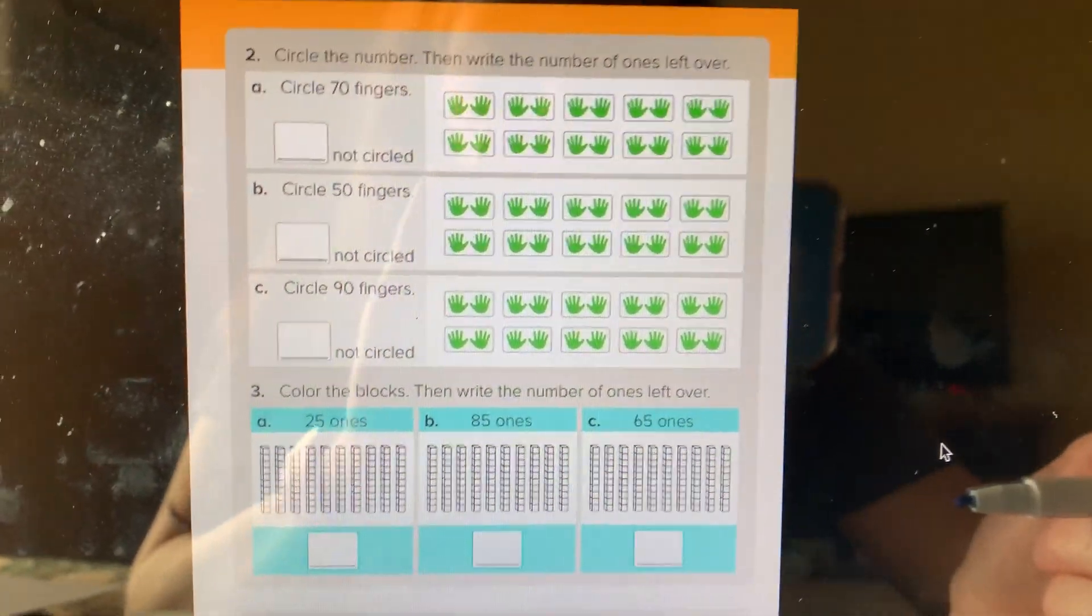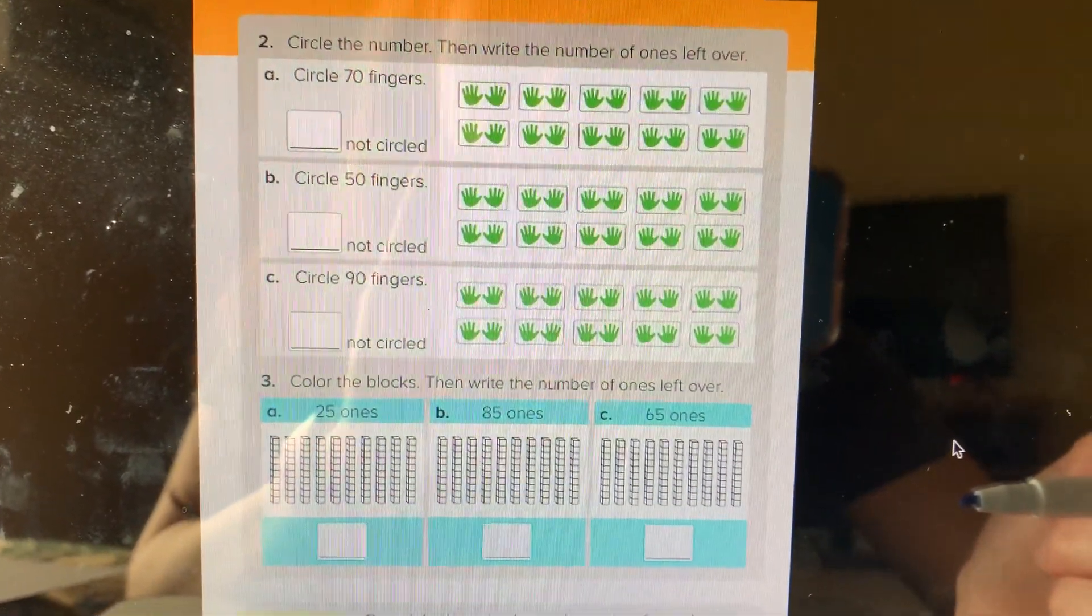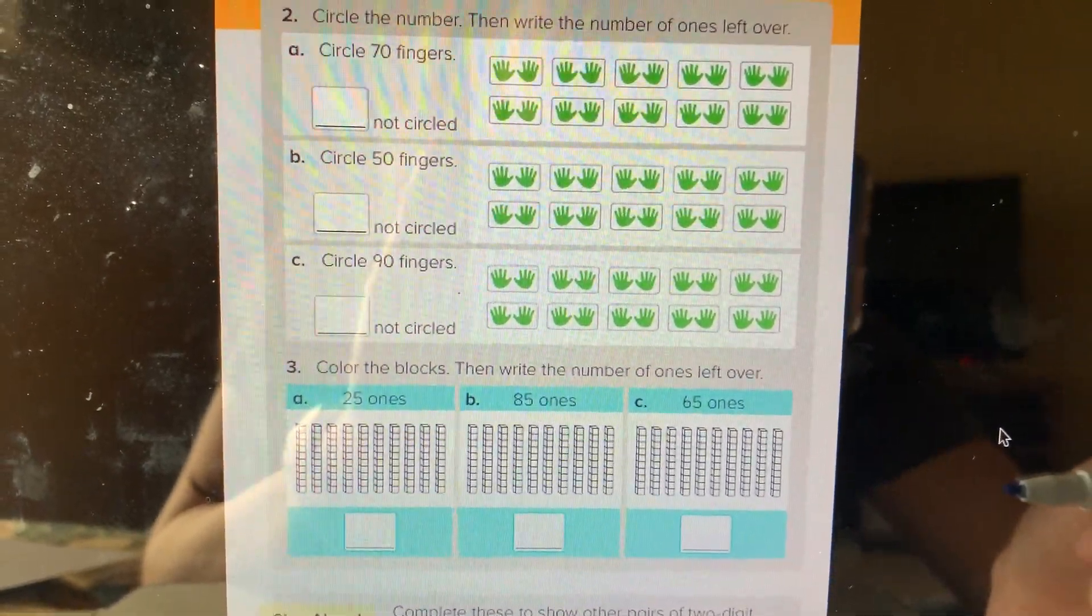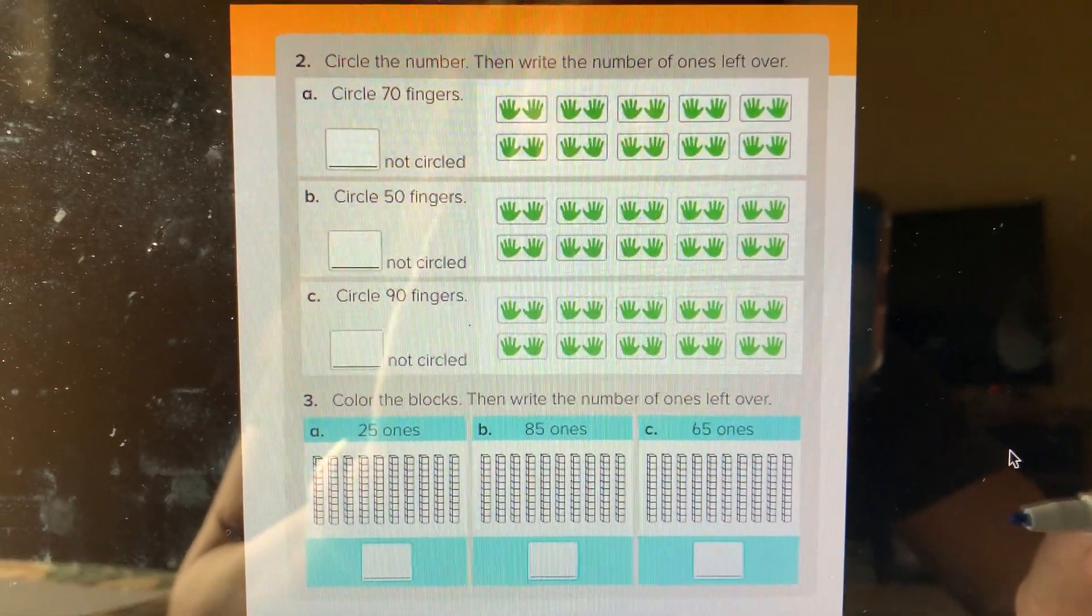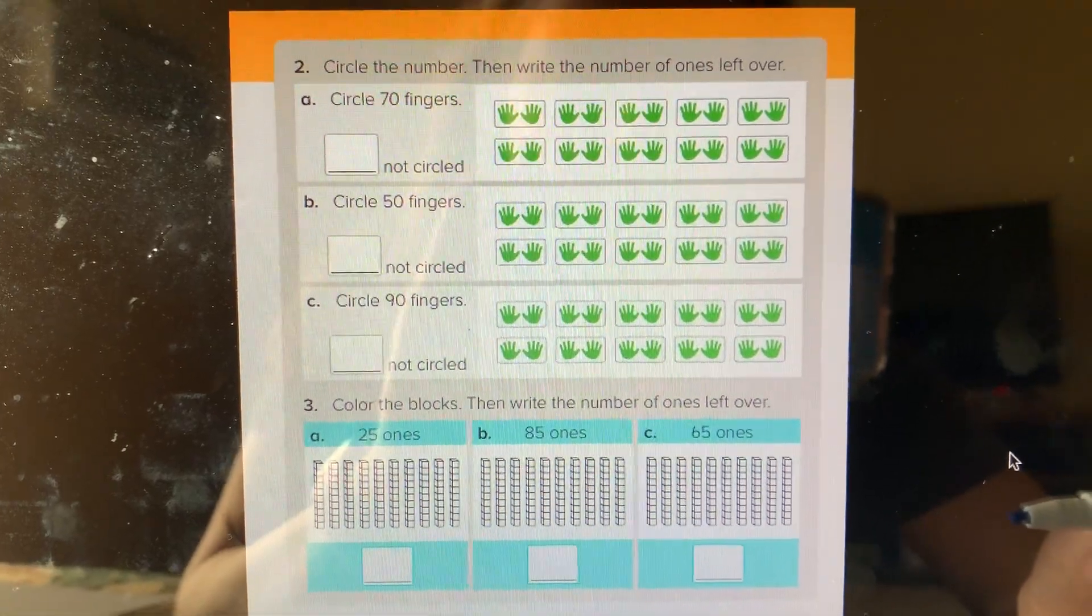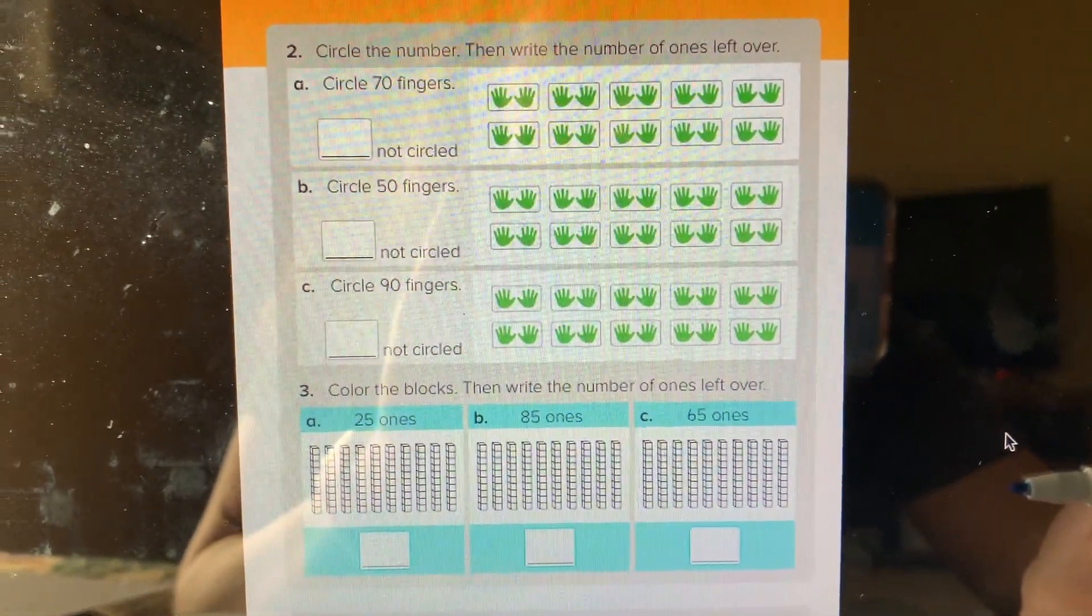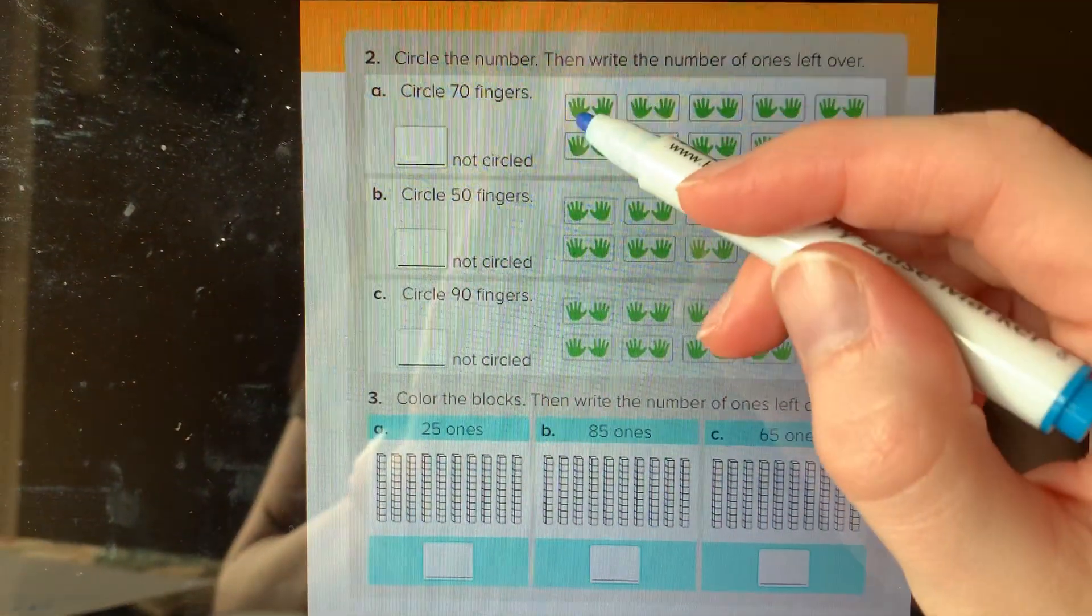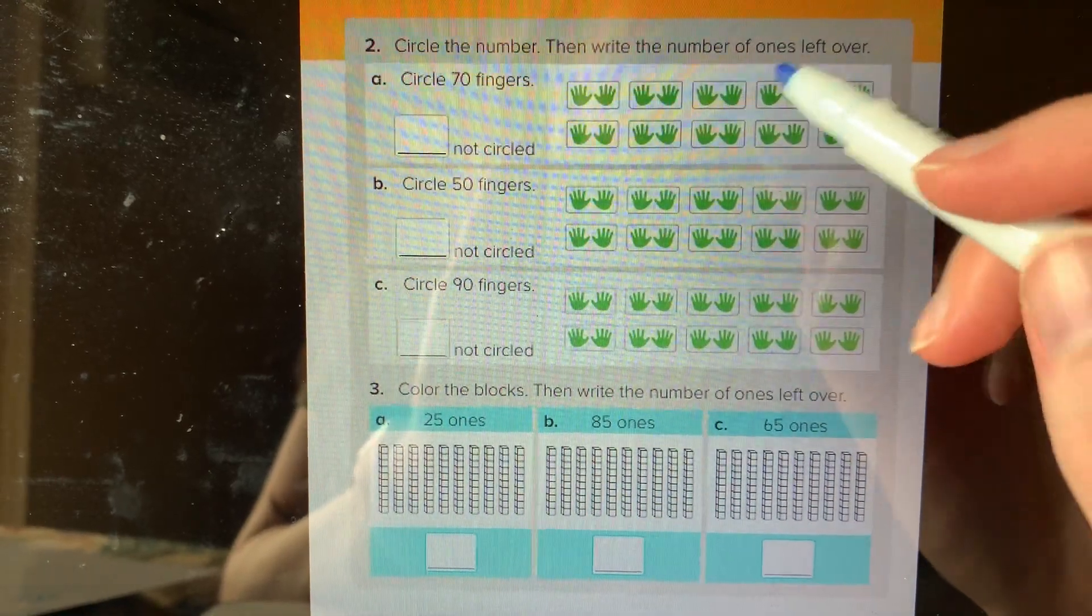All right, here's that next page then. So it says circle 70 fingers, and I know that total I have 10 fingers and so do all of you. So we have 10 fingers and they're showing us 10 fingers in each group.